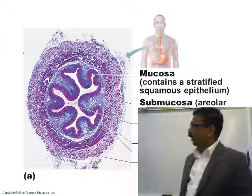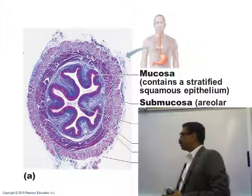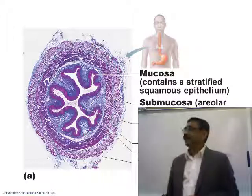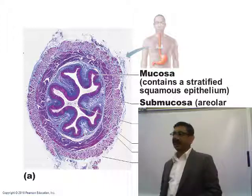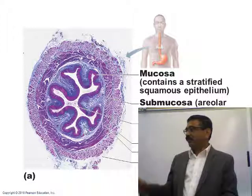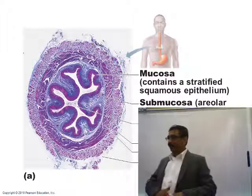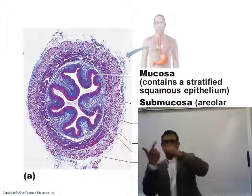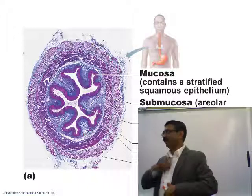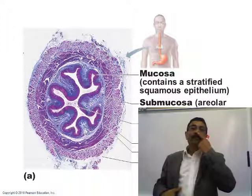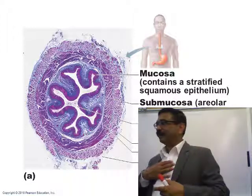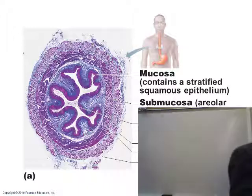In cross-section, the esophagus has four layers: mucosa, submucosa, muscularis externa. The outermost layer is not serosa but is called adventitia. This is because the esophagus is not an abdominal organ — it is in the thorax — so the visceral peritoneum does not cover it. That is why the outermost layer is called adventitia rather than serosa.